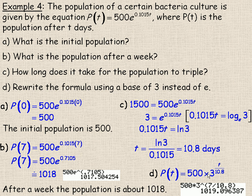So the formula is 500 times 3 to the power of the time over the tripling period. If instead of tripling you had doubling, then you would have a 2 as the base: 500 times 2 to the power of time over whatever the doubling period is. And that's the end of the lesson.